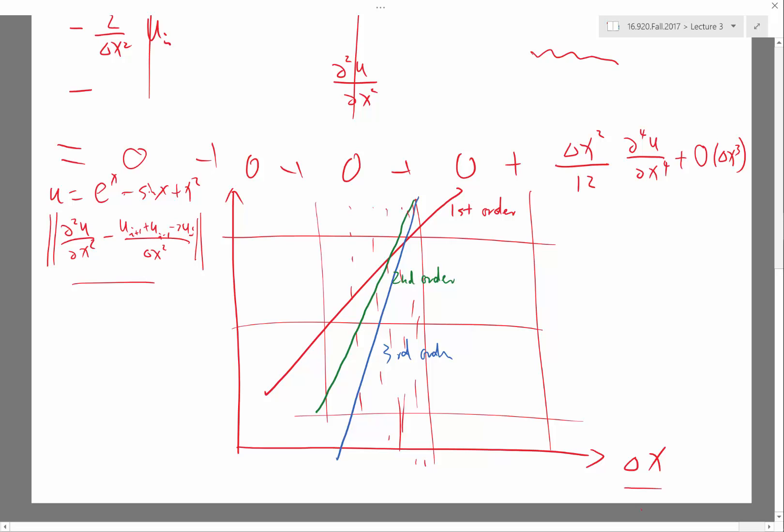So this is a way to obtain the discretization error or approximation error. How much error am I incurring in approximating a differential operator? Here, there is an important distinction. I'm not talking about the difference between the true solution and the numerical solution.